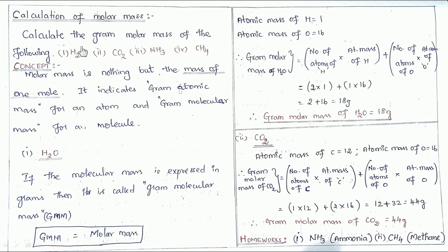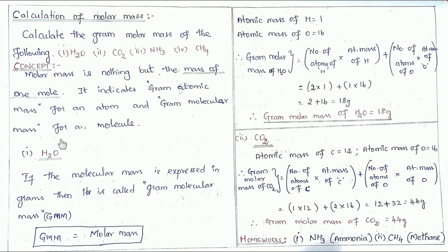We have to be very clear: if it is a molecule we have to calculate the molar mass, and if it is an atom we just write the gram atomic mass. Now let us calculate the molar mass of water. The formula of water is H₂O. If the molecular mass is expressed in grams, we call it the gram molecular mass, which we abbreviate as GMM. GMM is nothing but molar mass, because it is the mass of one mole. Molecular mass is the sum of atomic masses of all the atoms present in the molecule.